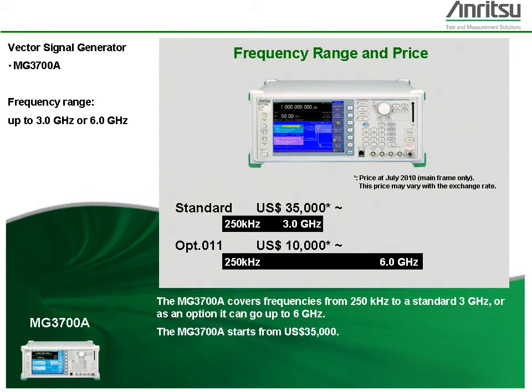The MG3700A covers frequencies from 250 kHz to a standard 3 GHz, or as an option, it can go up to 6 GHz. The MG3700A starts from $35,000.